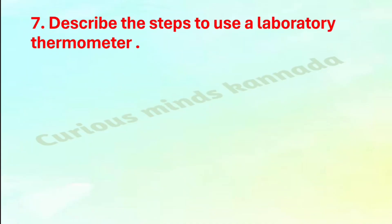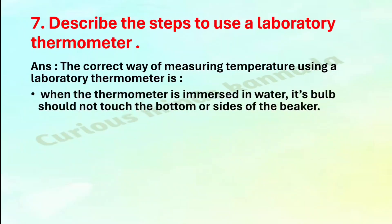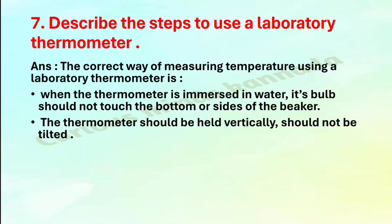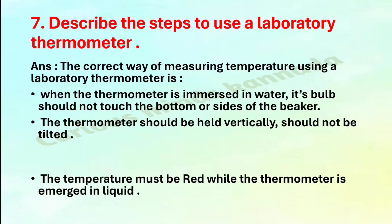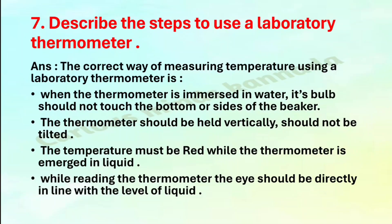Seventh: Describe the steps to use a laboratory thermometer. Answer: First, when the thermometer is immersed in water, its bulb should not touch the bottom or sides of the beaker. The thermometer should be held vertically and not tilted. The temperature must be read while the thermometer is immersed in the liquid. While reading, the eye should be directly in line with the level of liquid.